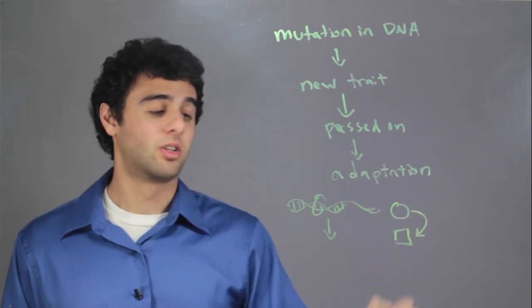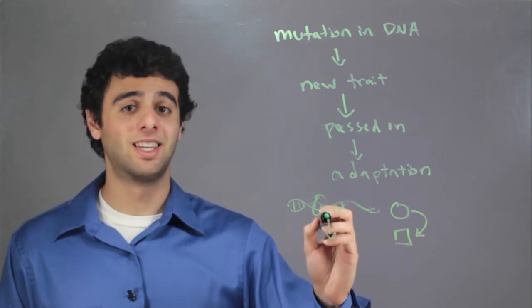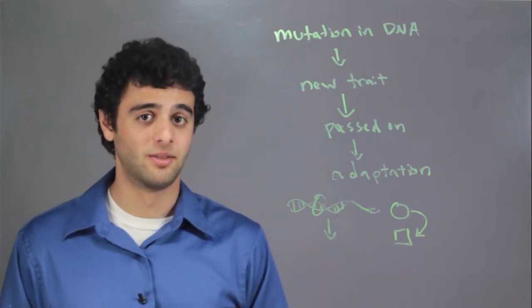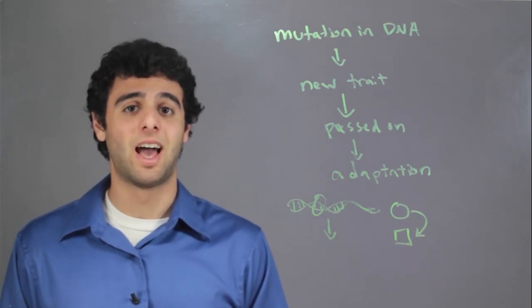...from a circle to a square, thus being better suited for the environment. But this all started out with DNA being mutated. I'm Michael Mehta, and this has been 'How is DNA related to adaptation?'